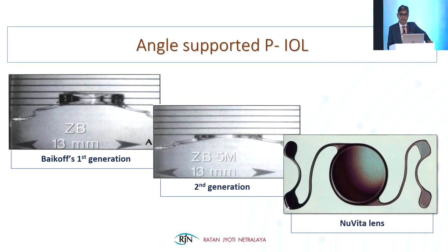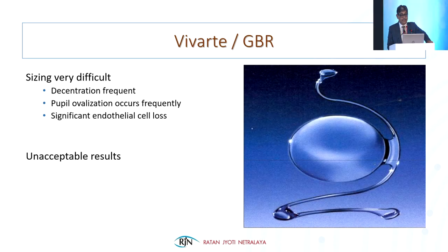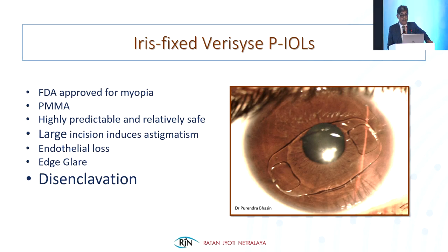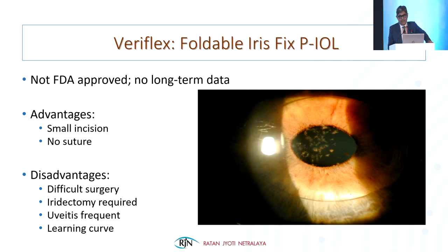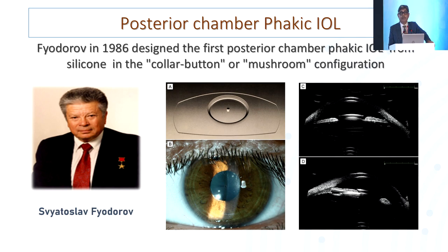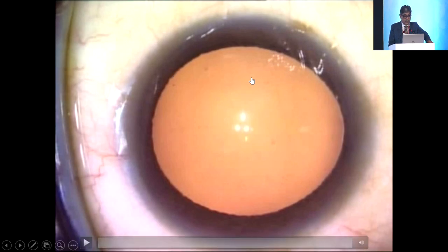The quest for posterior chamber phakic IOLs started since 1986. Variety of lenses have been developed and implanted. The common earlier one was made of PMMA—large incision, disenclavation, damage to the cornea. The first prototype of the present-day foldable soft phakic lens placed in the sulcus was done by Fyodorov in 1986, made of silicone material.